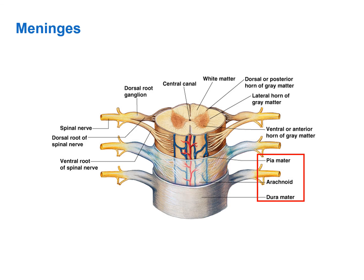The meninges can be infected by a virus, bacteria, or fungi, causing them to become inflamed — that condition is known as meningitis. Inflammation specifically of the meninges of the spinal cord is called spinal meningitis. For now, simply know that there are membranes lining the dorsal body cavity and surrounding its organs, and that they are called meninges.